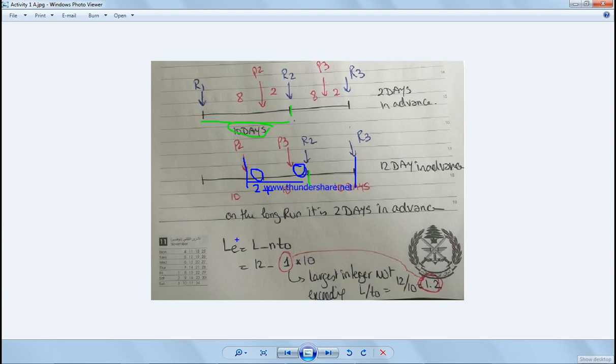If this is really confusing for you, just see it like this equation: we have L effective equals L, which is 12, minus n times T0. We have that T0 is equal to 10. n is the largest integer not exceeding L over T0. L over T0 is 12 divided by 10, which is 1.2. What's the largest integer not exceeding 1.2? It's 1. So 12 minus 1 times 10, we have equal to 2 days.